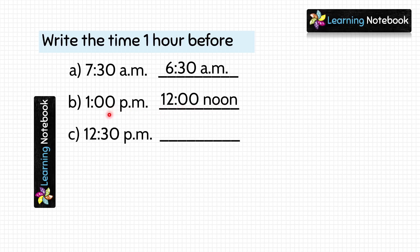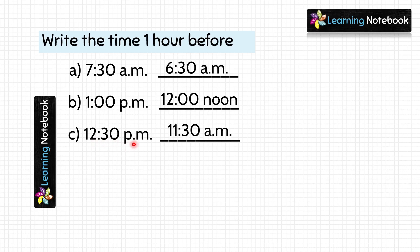Next is 12.30 PM. 1 hour before this will be 11.30. But since it is PM, that is afternoon, 1 hour before 12.30 PM will be 11.30 AM.